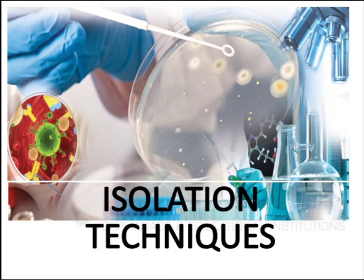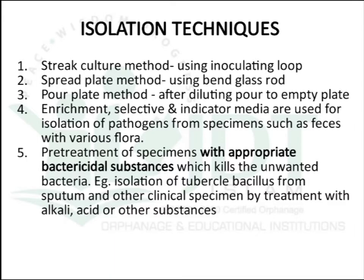Now let's see the different methods. The first method for isolation is the serial subculture method. We will use an inoculating loop and transfer the suspension of microorganisms to a fresh broth in order to attain a separated, isolated colony, so that it can be easily isolated and we can subculture that single colony of microorganism.